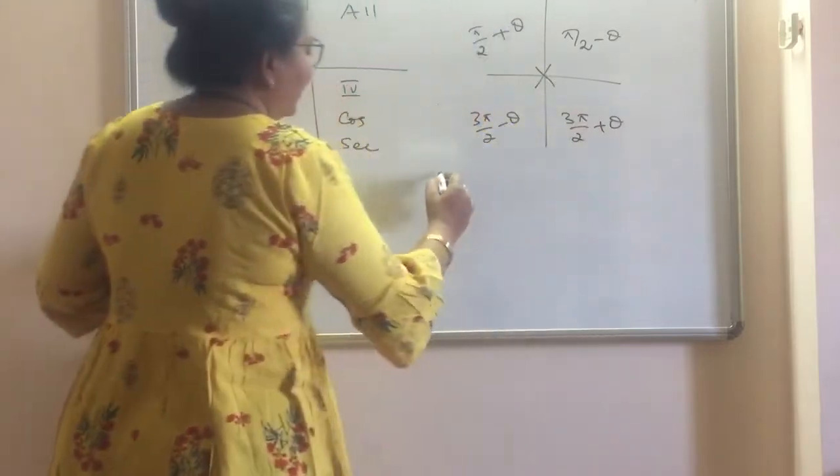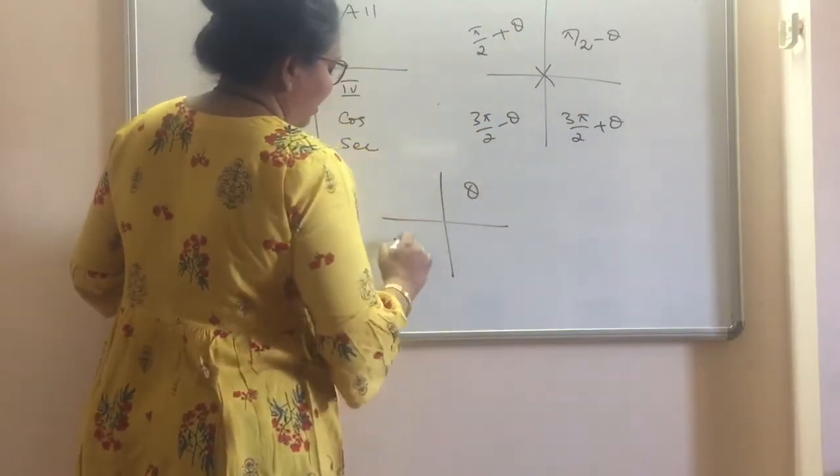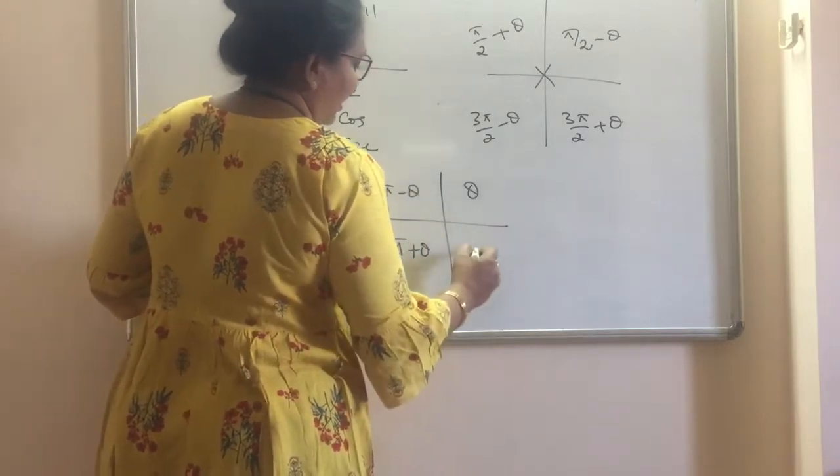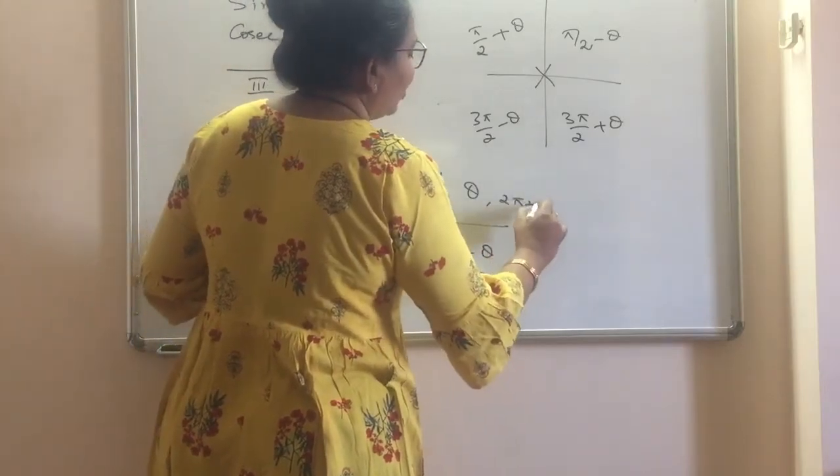And the pi table we have done: pi minus theta, pi plus theta, and this is going to be 2 pi minus theta. You can say this is even 2 pi, 2 pi plus theta.